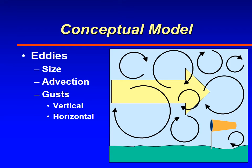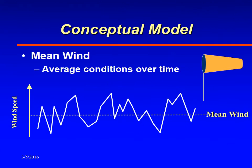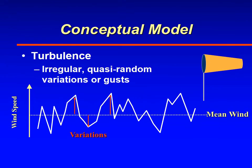Eddies cause gusts in the atmosphere — not only vertical gusts as the aircraft experiences, but also horizontal gusts. They produce the variation in wind speed that we call gusts. You can average the wind speed since it's always fluctuating, and meteorologists consider any variation from the average to be turbulence.